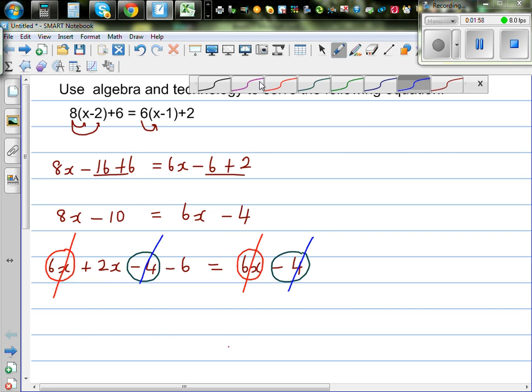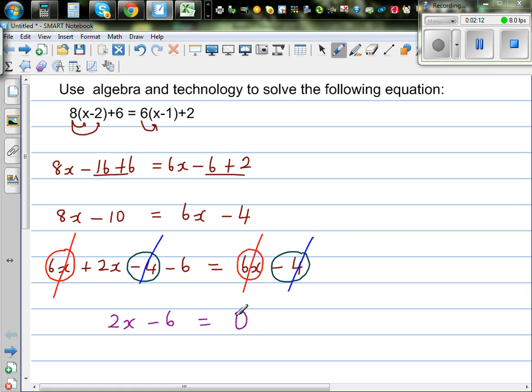So what have we got? This equation now changes to 2x minus 6 equal to what? There's nothing on the right hand side. So how will you write nothing in maths? Nothing in maths is written by 0. 0 means nothing.